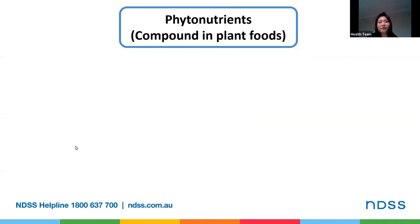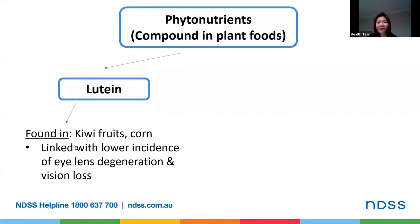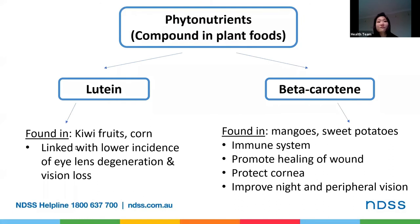Phytonutrients are compounds in plant foods. Some found in carbohydrate-rich foods include lutein, found in kiwi fruit and corn, which has been linked to lower incidence of eye lens degeneration and associated vision loss as we age. There's also beta-carotene, generally found in mangoes and sweet potatoes, which not only enhances the immune system and promotes wound healing, but also protects the surface of the eye — the cornea — keeps them moist and healthy, and improves night and peripheral vision as well. These are just two of the many phytonutrients out there.